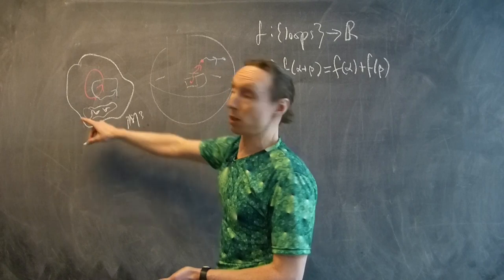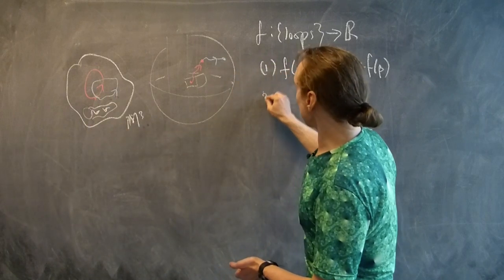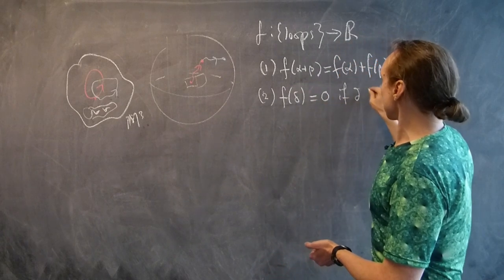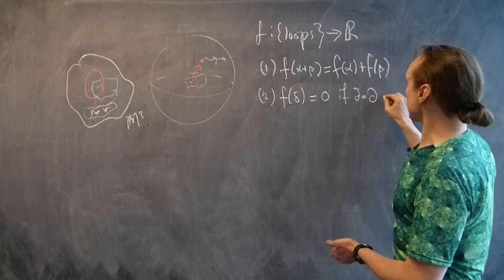The cohomology is always supposed to give zero. So, second property, f of delta equals zero if delta is the boundary of a surface.